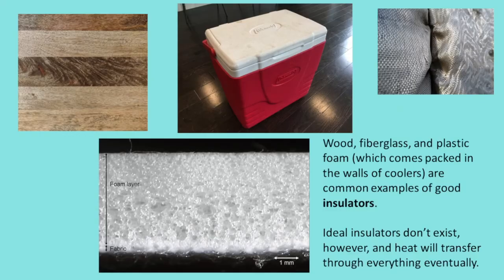Conversely, there are also ways in which we can limit the transfer of heat with the right material. Different materials are influenced by heat at different rates, so while some objects will heat up very quickly when exposed to heat, others are considered insulators, meaning that heat will transfer through them very slowly. A cooler is a good example of this — coolers usually have their walls packed with hard, dense foam, which is a good insulator and will prevent heat from getting in, keeping your food cold. It's worth noting that while an ideal insulator is one that will never allow any transfer of heat, it's still only an idealization. No such insulator exists in reality, and even the inside of a cooler will warm up eventually.